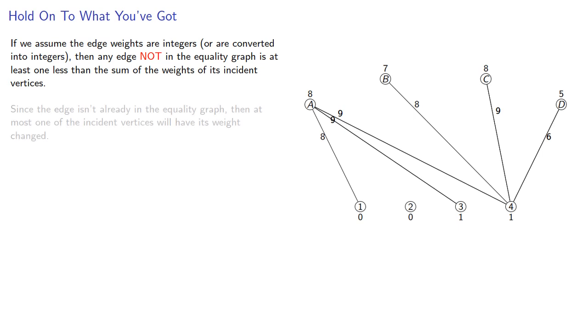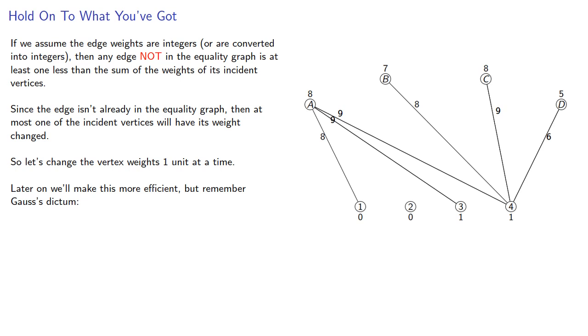Since the edge isn't already in the equality graph, then at most one of the incident vertices will have its weight changed. So let's change the vertex weights one unit at a time. Later on we'll make this more efficient, but remember Gauss's dictum: solve the problem first, then improve your solution.